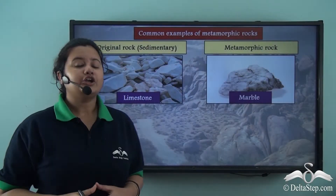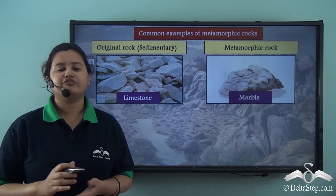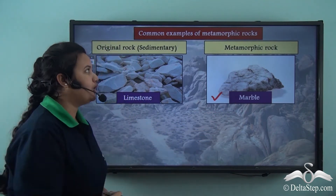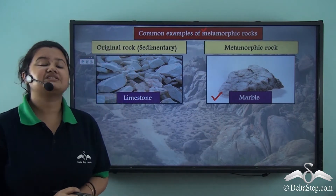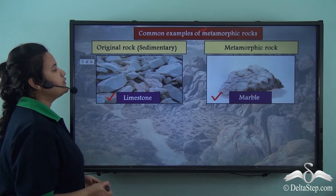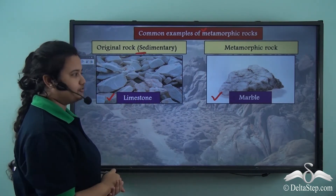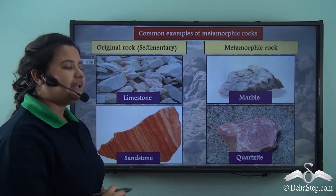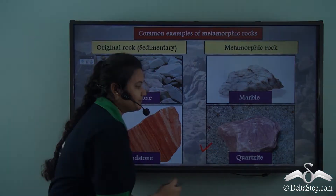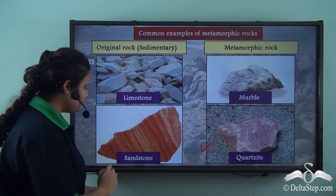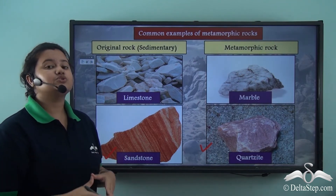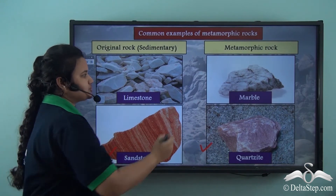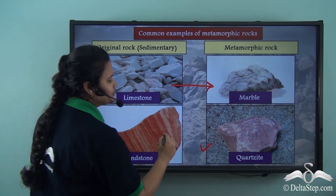Let's learn about a few examples of metamorphic rocks. Taj Mahal is composed of white marble, so marble is an example of a metamorphic rock. Marble is formed from limestone — thus limestone, which is a type of sedimentary rock, gets metamorphosed into marble, which is a metamorphic rock. Another example is quartzite — quartzite is a metamorphosed form of sandstone, which is a sedimentary rock. Due to intense heat and pressure, limestone gets converted to marble and sandstone gets converted to quartzite.